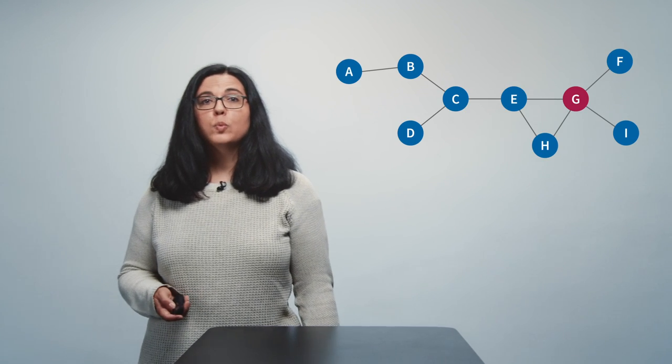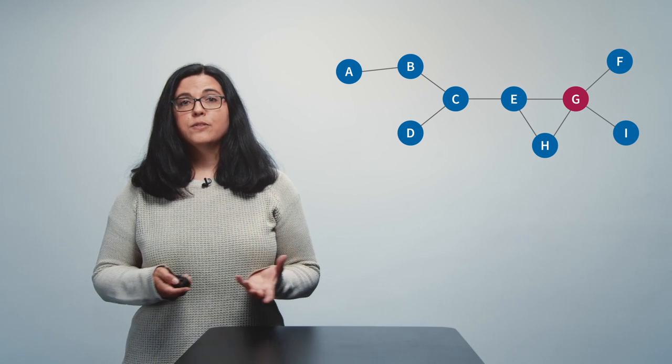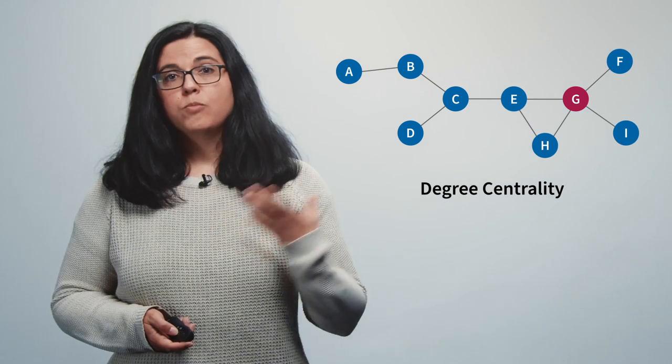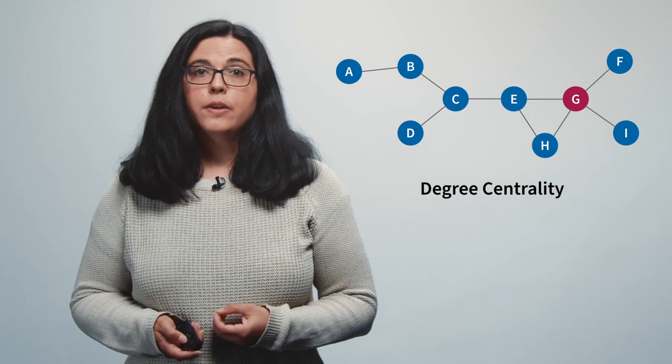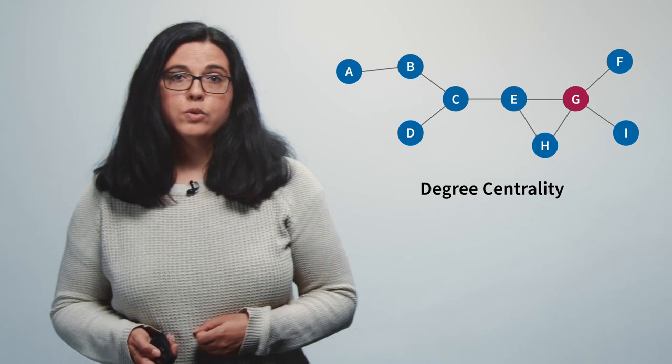You may have thought that node G is the most influential in this network. Obviously it's the node with the highest number of links. And this kind of centrality we call degree centrality. We count the number of edges of every link. And G has a degree of four because it has four links to other nodes. Degree centrality is a measure of communication activity or authority or prestige.